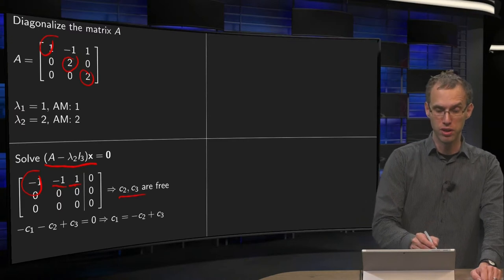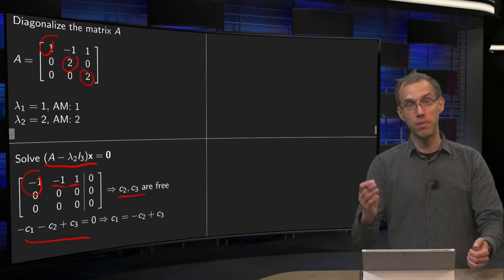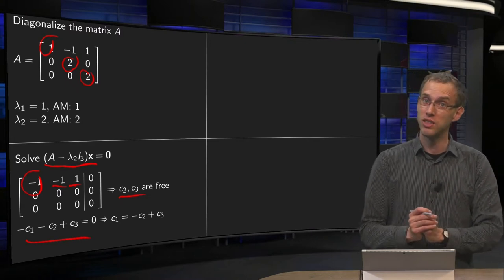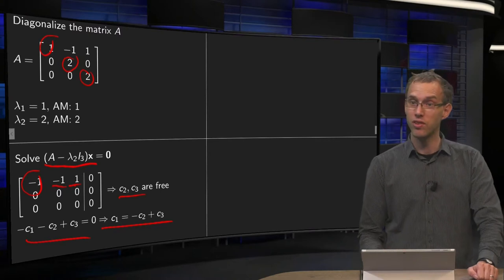We can solve for c1, because the first equation yields minus c1 minus c2 plus c3 equals 0. So we find c1 equals minus c2 plus c3.